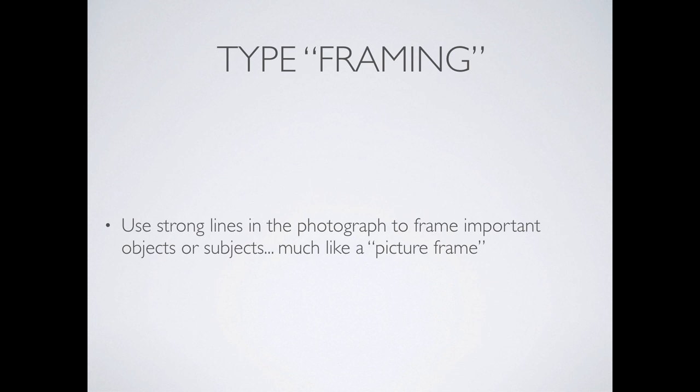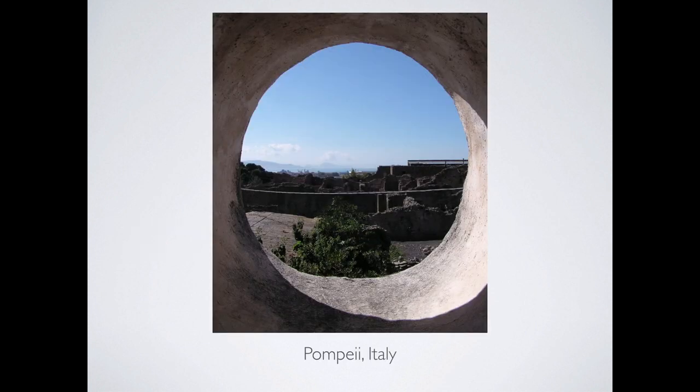Framing is using a strong object in the foreground to frame something in the background. For example, this is in Pompeii, Italy — we're looking at the Bay of Naples and we've got the strong circular window oculus, which is then framing the view out toward the Bay of Naples. So we're using one foreground element to frame something in the background.